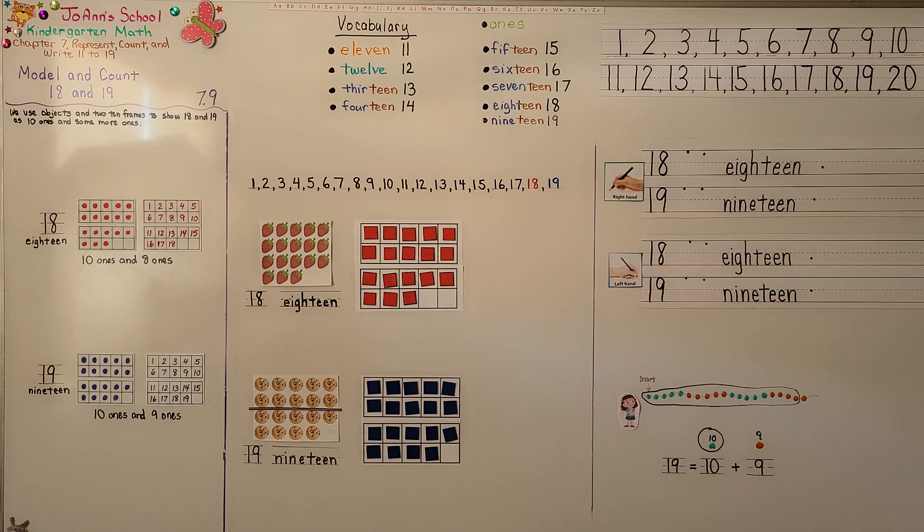Our next lesson, 7.10, we're going to count and write 18 and 19 with our right and left hands. I hope you have a great day, and I hope you'll join me. And I hope you hit the like button. Bye.